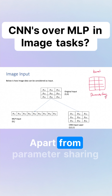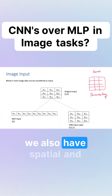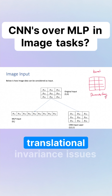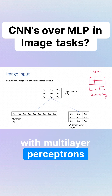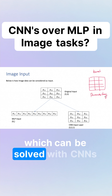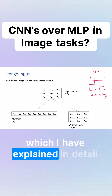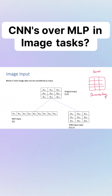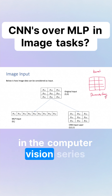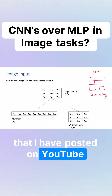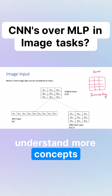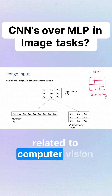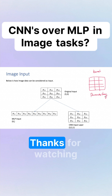Apart from parameter sharing, we also have spatial and translational invariance issues with multilayer perceptrons which can be solved with CNNs, which I have explained in detail in the computer vision series posted on the YouTube channel. Please click on the link below to understand more concepts related to computer vision. Thanks for watching.